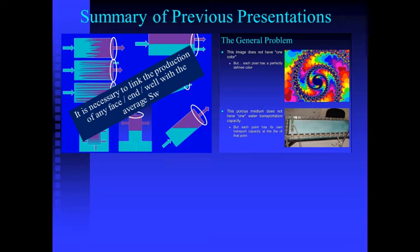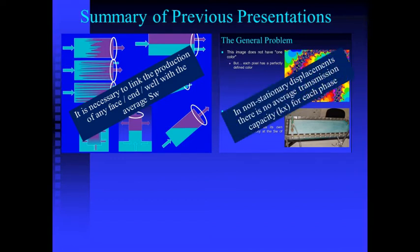And, in the same way, in real multi-phase displacement systems, when we are in a non-stationary state, that is, during displacement, although any point has a perfectly defined transmission capacity for each phase, the system as a whole does not have a defined average transmission capacity. This circumstance prevents us from defining the average permeability for a phase in a non-stationary non-punctual system.